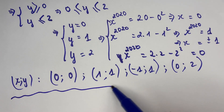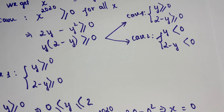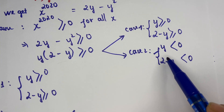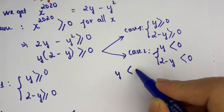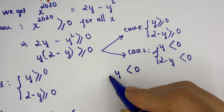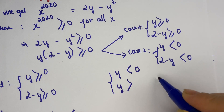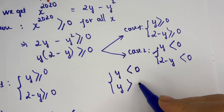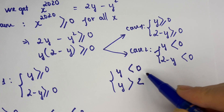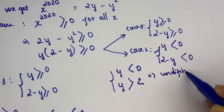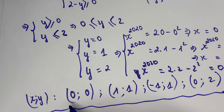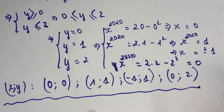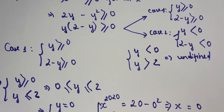For case number two, y is smaller than zero or y is greater than two, and we can see that this is undefined — there are no solutions. Therefore, we have just four solutions in total. Thank you for watching my video, don't forget to subscribe to my channel. Love you all, bye bye!